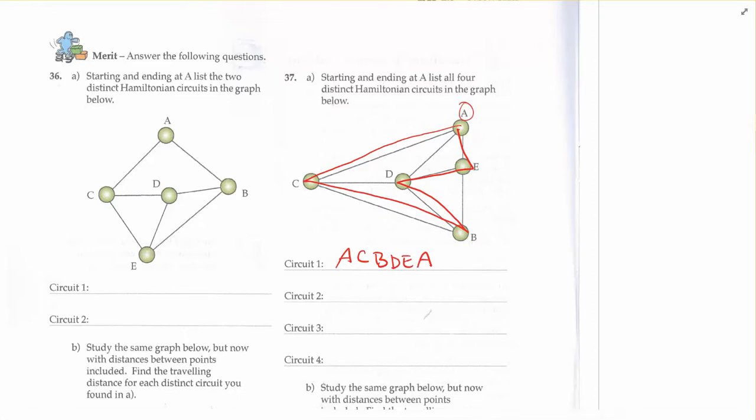And grab a different color highlighter. The strategy for me is sometimes to think about, okay, well that was one possibility from A to C. Is there a different possibility from A to C? And it looks like there is. I could go to D first. So if I go A to C, D, B, E, A, that works.